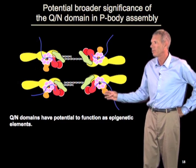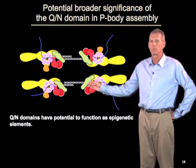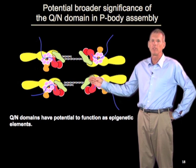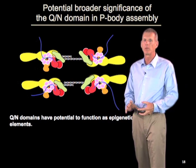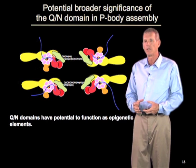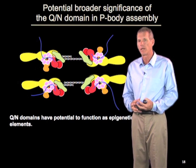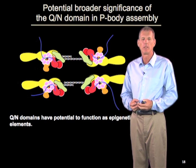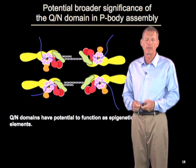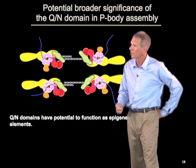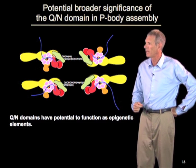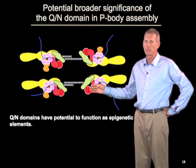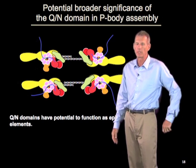The fact that QN domains can be irreversible allows them to function as epigenetic elements. If you assemble RNA protein granules through prion domains, you have the potential for a heritable genetic state. In fact, a model from Kazik Sai and Eric Kandel has proposed that such prion-driven assembly may play a role in synaptic plasticity and memory formation.